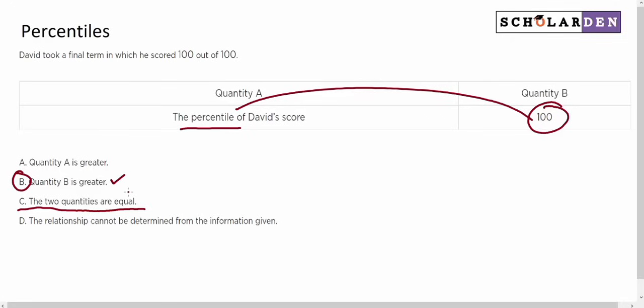So the definition of percentile is the percentage of values in a data set less than a given value. All right, see you in the next video.